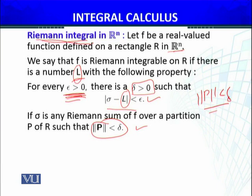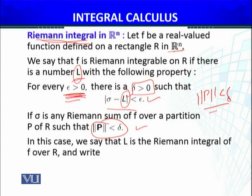If this is true for every epsilon, then we say that the function of several variables is Riemann integrable, and in fact the Riemann sum equals this number L. In this case we say that L is the Riemann integral of f over the rectangle R.